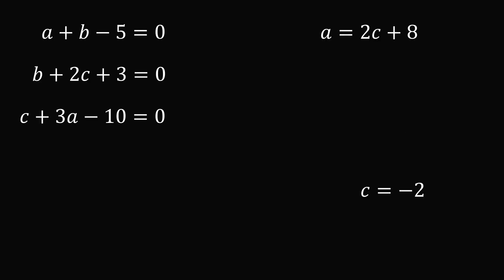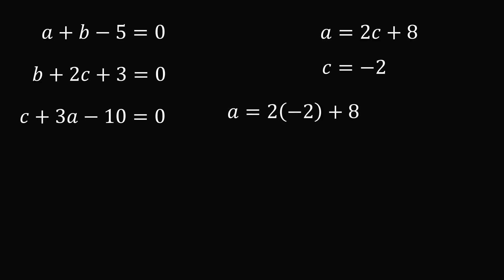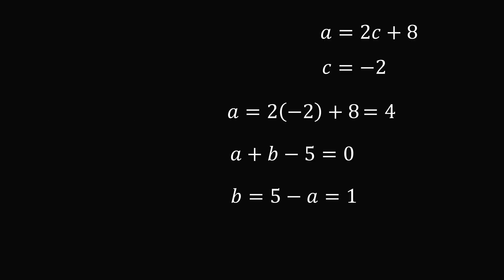We can then substitute that a is equal to 2c plus 8, which means that a is equal to 4. Finally, we can take the first equation that a plus b minus 5 is equal to 0. We can solve that b is equal to 5 minus a, which means that b is equal to 1. So we've solved for a, b, and c.